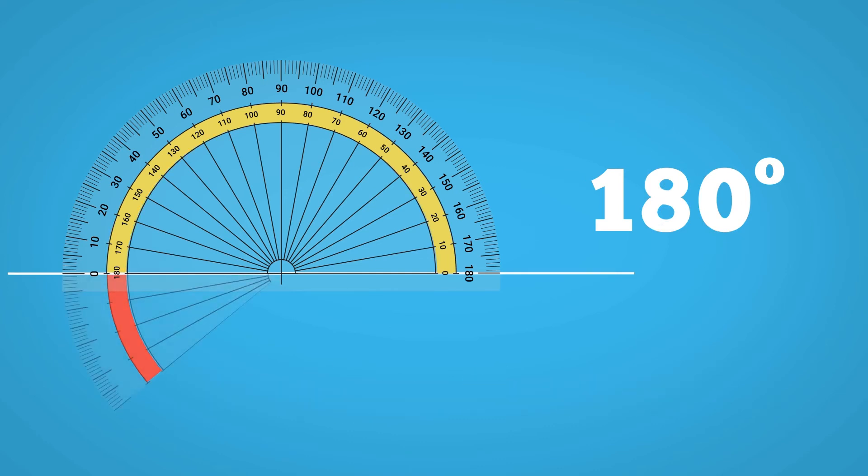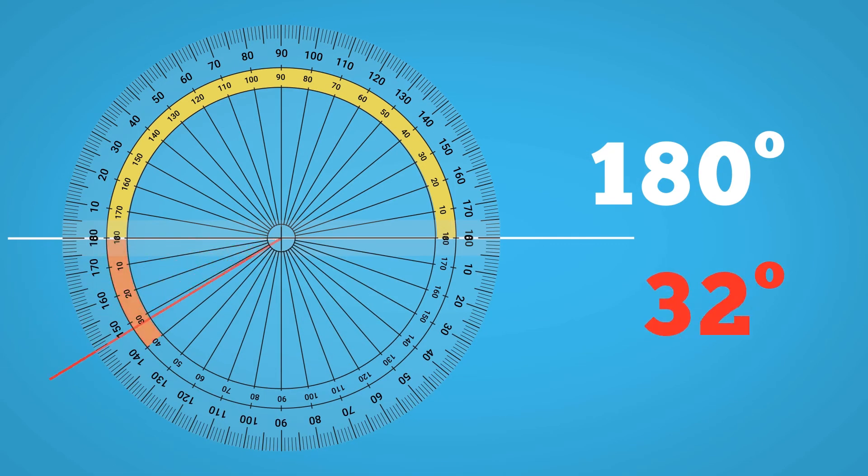However, when you need to measure a reflex angle, that is, one that is greater than 180 degrees, you have three options. If you only have a 180 degree protractor, measure the exact part and add it to 180 to get your answer.